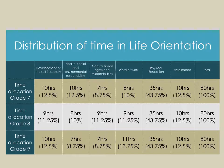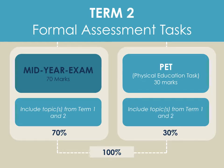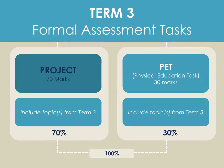The breakdown of assessment is the same for grades 7, 8 and 9. In term 1, learners are required to do a written task which counts 70% of their final marks, and a physical education task which counts 30% — together making 100%. In term 2, there's a mid-year exam counting 70% and a physical education task counting 30%, together making up 100% of term 2's results.